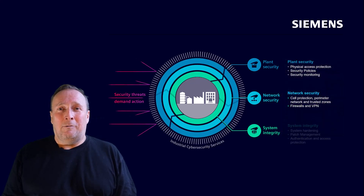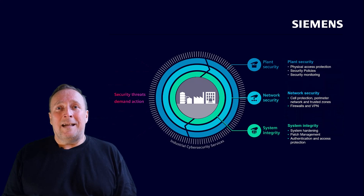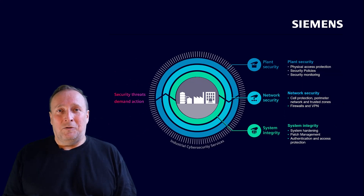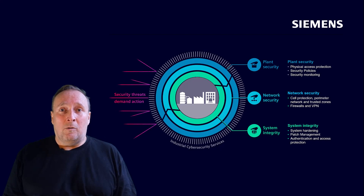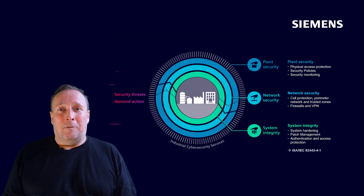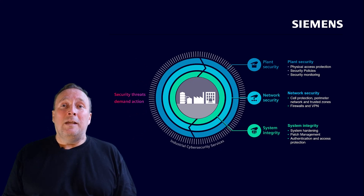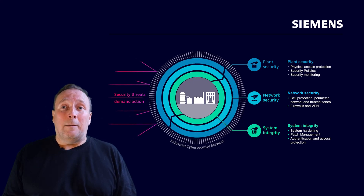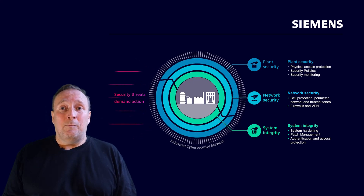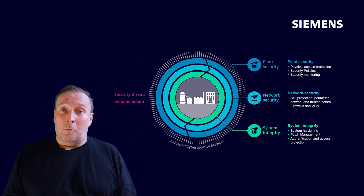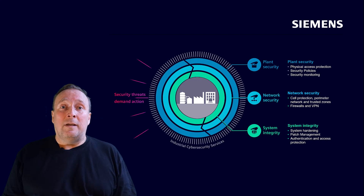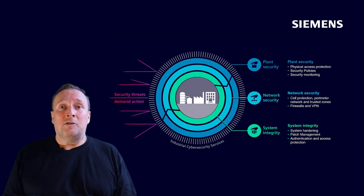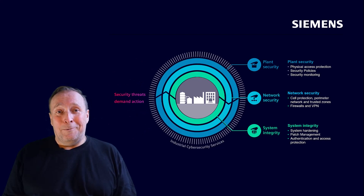With system integrity, it comes down to the hardening of the system — for example, making the product more resistant to disturbances and accesses from the outside. Patch management is used to keep the components up to date on the latest development level. Furthermore, it is important to recognize attacks and to make authentication and access protection to the field devices more secure.